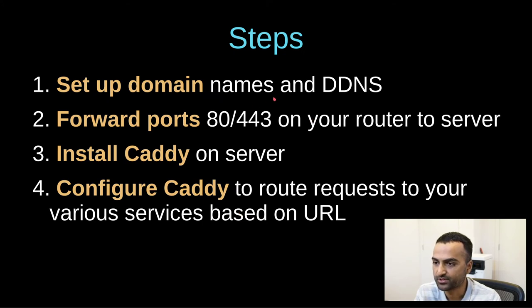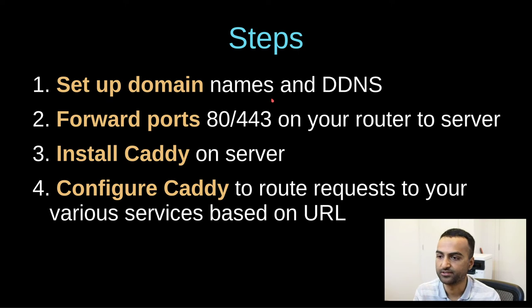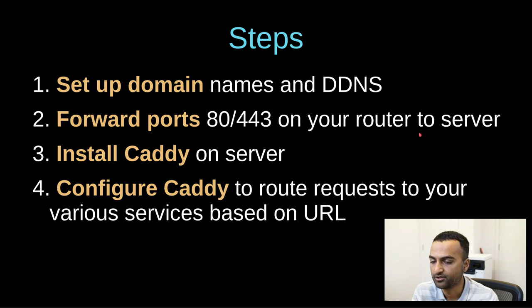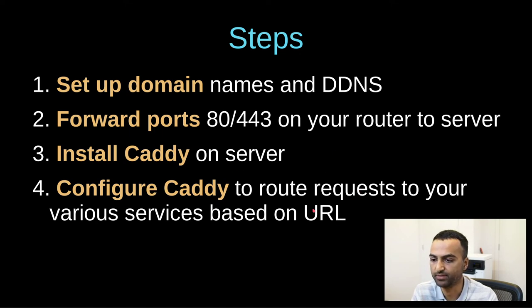So these are the basic steps to set up what I showed you with Caddy. First, you're going to set up a domain name and a DDNS so we can use a domain name rather than the IP address. Second, we're going to forward the ports in your router to point to your server — just those two ports. Third, we're going to install Caddy on the server and configure it to route everything to your different services based on the subdomain. I'll go over the first two steps quickly since there are lots of tutorials available.